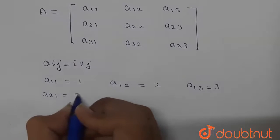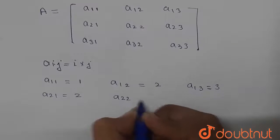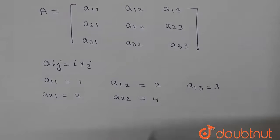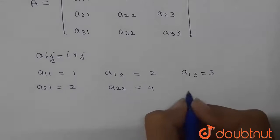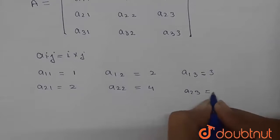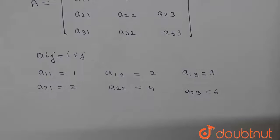Similarly, a21 will be equal to 2. a22 will be equal to 2 times 2, that is 4. And a23 will be 2 times 3, that is equal to 6.